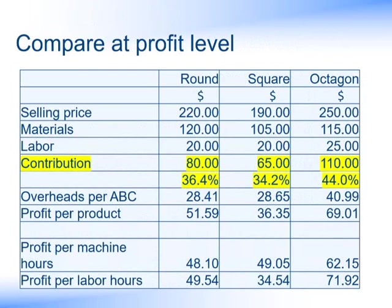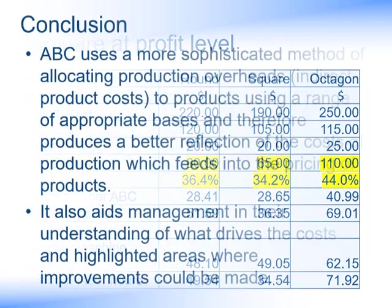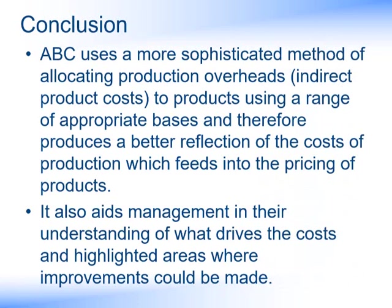Returning to our comparison at profit level, if we take selling price less materials and labour, we arrive at the contribution. There are different levels of contribution achieved from each of the three products, which could be due to market forces on the selling price. So making a comparison at profit level is not really appropriate — we really need to be looking at the overheads when comparing different allocation bases. ABC uses a more sophisticated method of allocating production overheads, sometimes referred to as indirect product costs, to the products using a range of appropriate bases, and therefore produces a much better reflection of the costs of production, which feeds into the pricing of the products. It also aids management in their understanding of what drives the costs, and highlights areas where improvements could potentially be made.